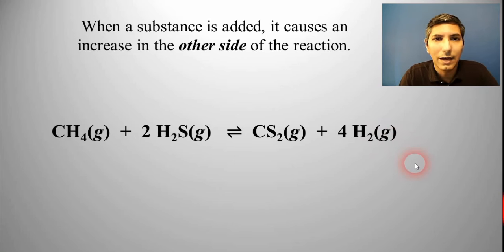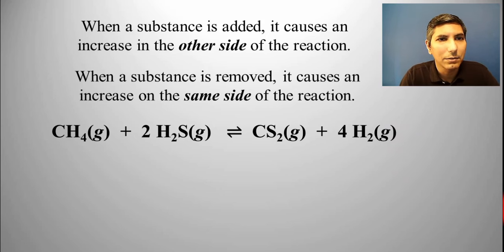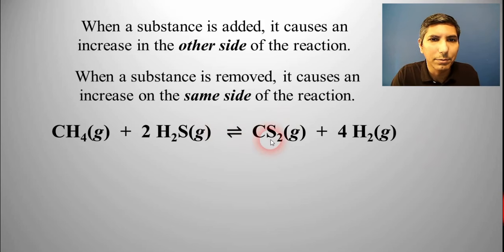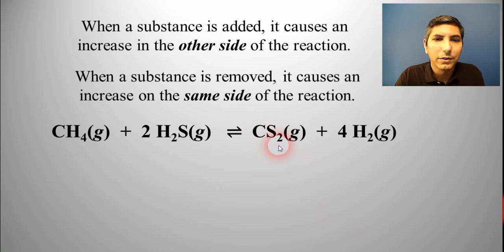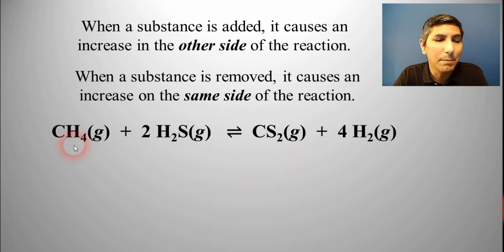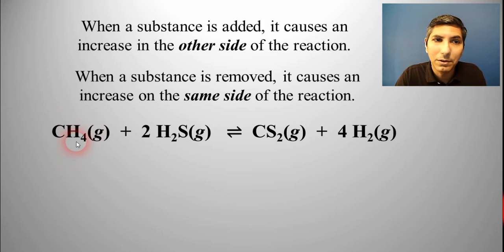When a substance is removed, it causes an increase on the same side of the reaction. So if you have this process at equilibrium and you decide to remove some carbon disulfide, it's going to cause the equilibrium to shift farther to the right — you'll make more carbon disulfide and more hydrogen, and the methane and hydrogen sulfide will go down. Likewise, if you have this at equilibrium and instead you remove some methane, the equilibrium is going to shift in order to replace and replenish the methane. So the methane will increase, hydrogen sulfide will increase, and then CS2 and hydrogen will go down.